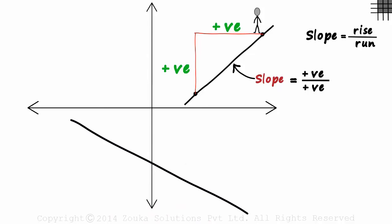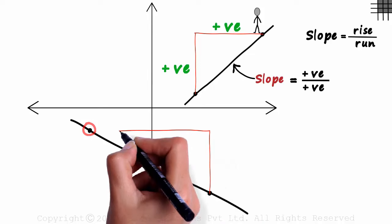Now look at this line. We use the same procedure. We mark two random points on the line. And to go from the bottom point to the top one, we rise and run.